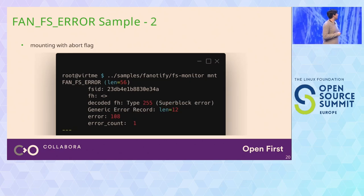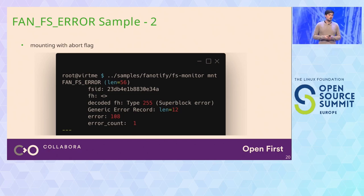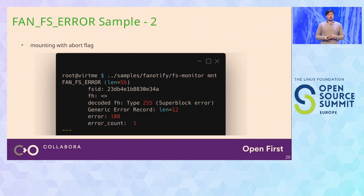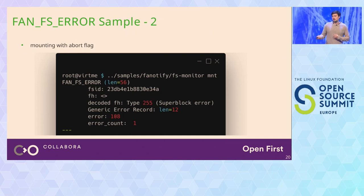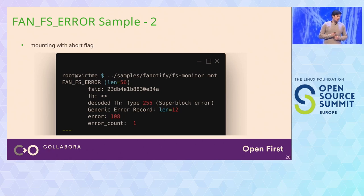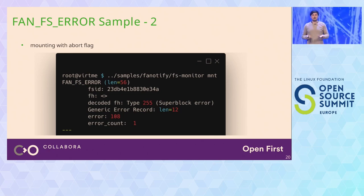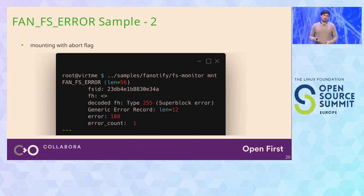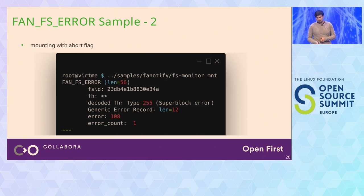This is another example — the error I triggered at the beginning of the talk when I showed the kernel log. It now becomes a structured event telling you this is a super block error, error 108, which on EXT4 is translated as 'EXT4 abort.' This also has the FSID but no file handle because this was an error in the file system itself — in the super block — not tied to a specific inode.